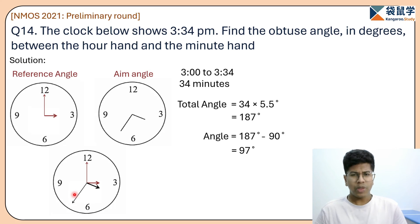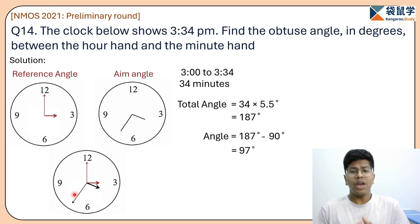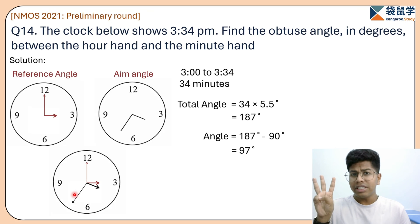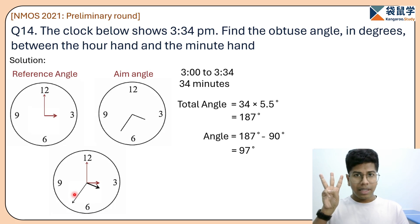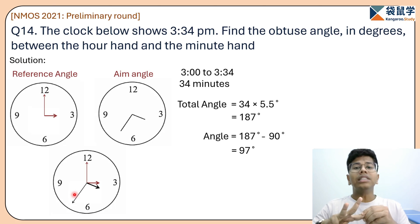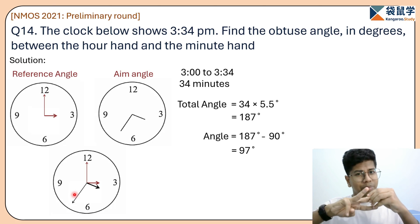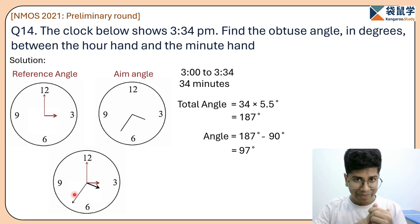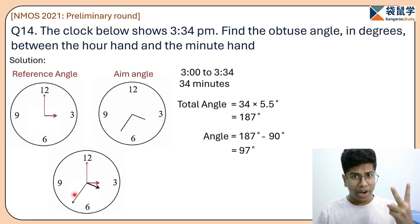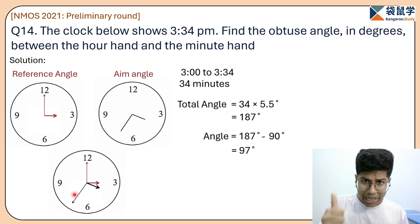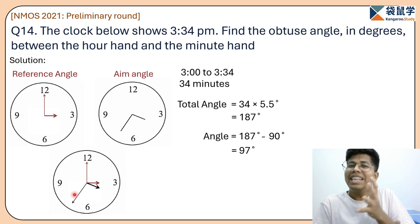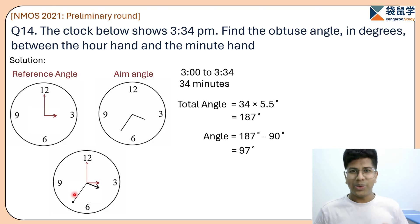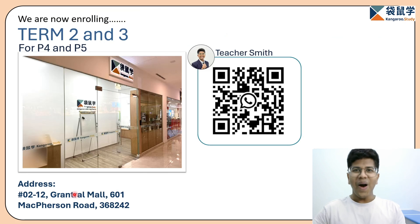So the aim angle — the obtuse angle between the hands at 3:34 PM — is 97 degrees. The question is complete. To summarize: whenever you have a clock problem, there are five key things. The three basics are the speed of the minute hand (6°/min), the speed of the hour hand (0.5°/min), and the chasing speed (5.5°/min). Then, to find time you need the aim angle, and you can always find a nearby reference angle that is easy to calculate.